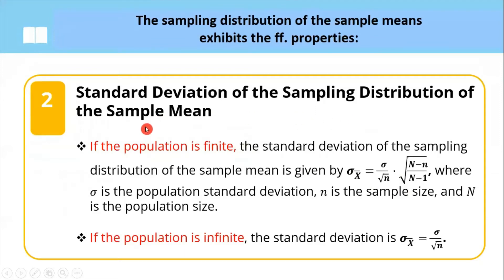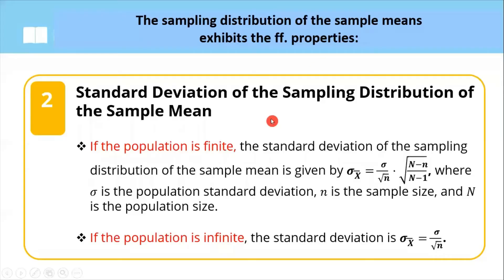The standard deviation of the sampling distribution of the sample mean is also known as the standard error. We have two formulas to use. First, if the population is finite — meaning fixed — we use the formula where sigma is the population standard deviation, small n is our sample size, and capital N is the population size. But if the population is infinite, a different formula is used. Note that the relationship between sample size and standard deviation is inversely proportional — the larger your sample size, the closer your sample mean to the actual population mean.